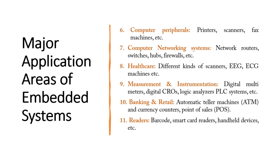Coming to computer networking systems: network routers, switches, hubs, firewalls — all these are embedded-related systems. A very important application area is healthcare, since the entire medical field depends on healthcare devices. Healthcare embedded systems include EEG machines, ECG machines, and all kinds of scanners such as MRI scanners.